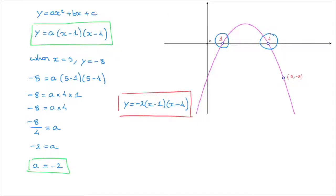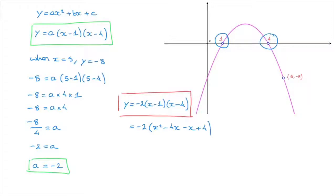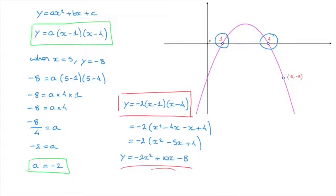Expanding gives negative two times (x squared minus four x minus x plus four), which simplifies to negative two times (x squared minus five x plus four). Finally, distributing the negative two across the parentheses, we find this parabola's equation to be y equals negative two x squared plus ten x minus eight. And that's the final answer — that's how we find the equation of a parabola that cuts the x-axis in two points using root factoring.